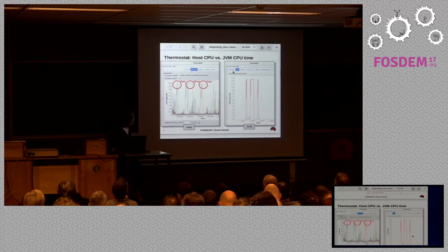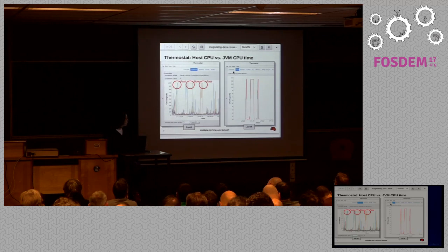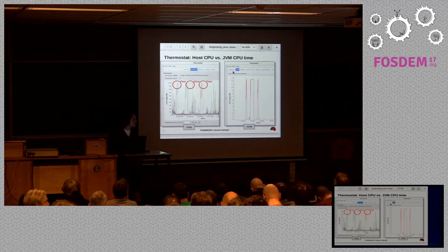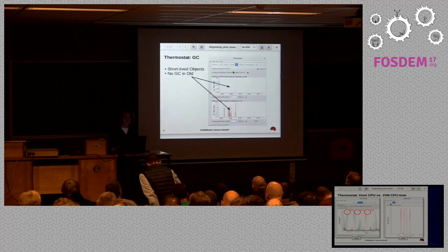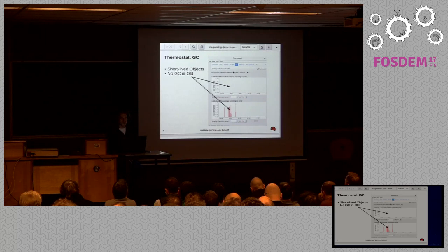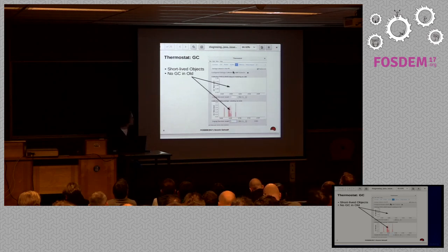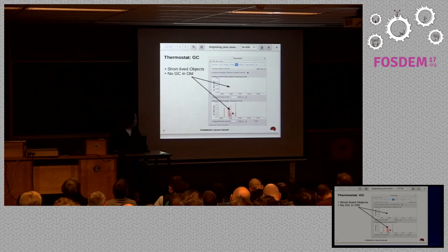Thermostat allows you to see the host information and the JVM information. If you look at the CPU graphs and run the demo application, here we can see that we have scheduled two fast tasks and one slow task. There's CPU consumption going on in the JVM and you see that propagating through to the host. Looking at GC cycles happening when we run that application - when the tasks run, with two fast tasks and one slow task - there are a few GC cycles. When there is a slow task running there are a few more, but overall the objects don't seem to propagate into the old generation. They seem to die young.